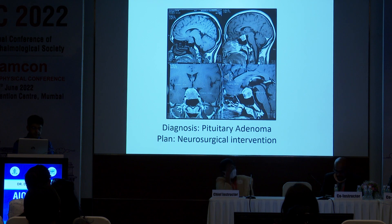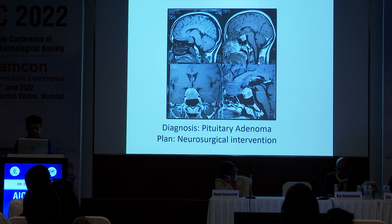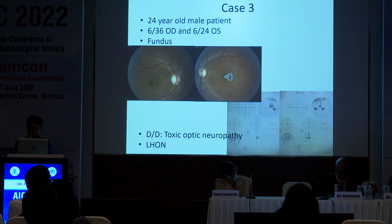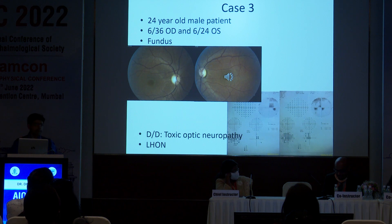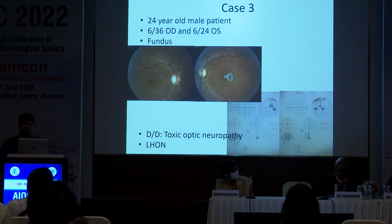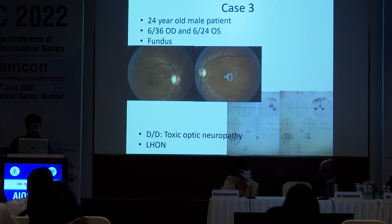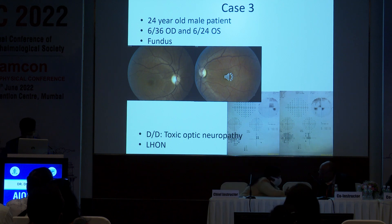Here is a primary optic atrophy due to a compressive optic neuropathy. A 24-year-old male patient with vision loss in both eyes is showing a bilateral temporal pallor on his optic nerves. There is a central or centrocecal scotoma on the visual fields. This could be a toxic optic neuropathy, but one always has to keep Leber's hereditary optic neuropathy in mind as well.